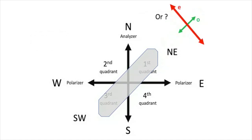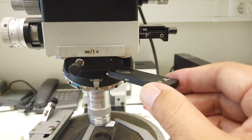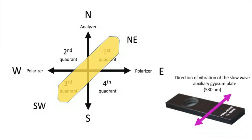Or, in other words, where is the ordinary ray plane and where is the extraordinary plane orientation? To know that, we need to insert the gypsum plate.